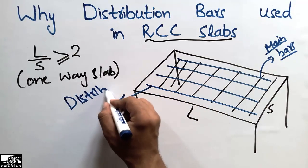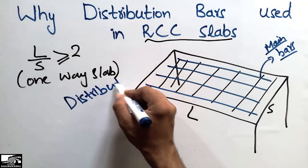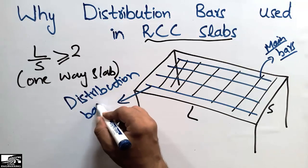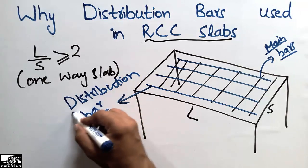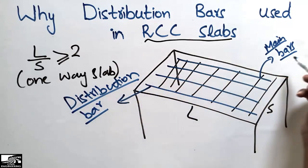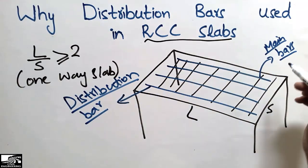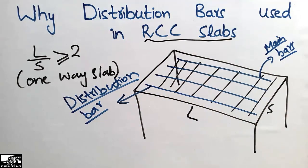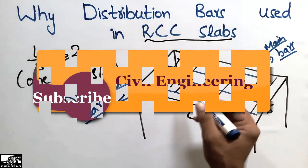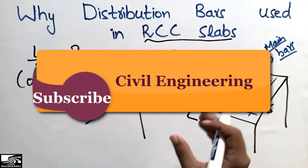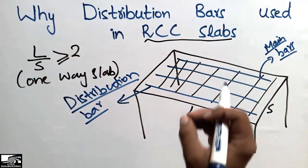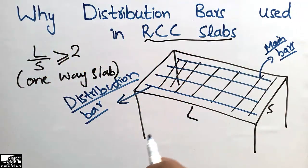The question is: why do we provide distribution bars if the main bars are already taking the load? The main bars are responsible for taking the tensile and compressive loads. The purpose of the distribution bars is to resist shrinkage stresses, temperature stresses, and creep stresses.